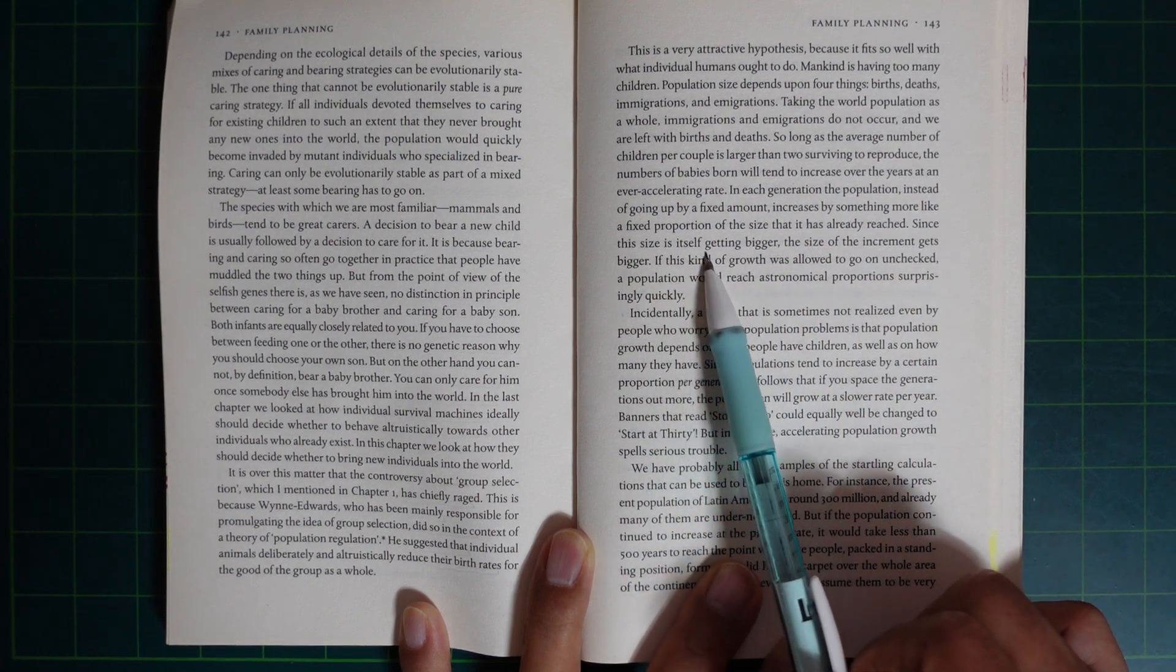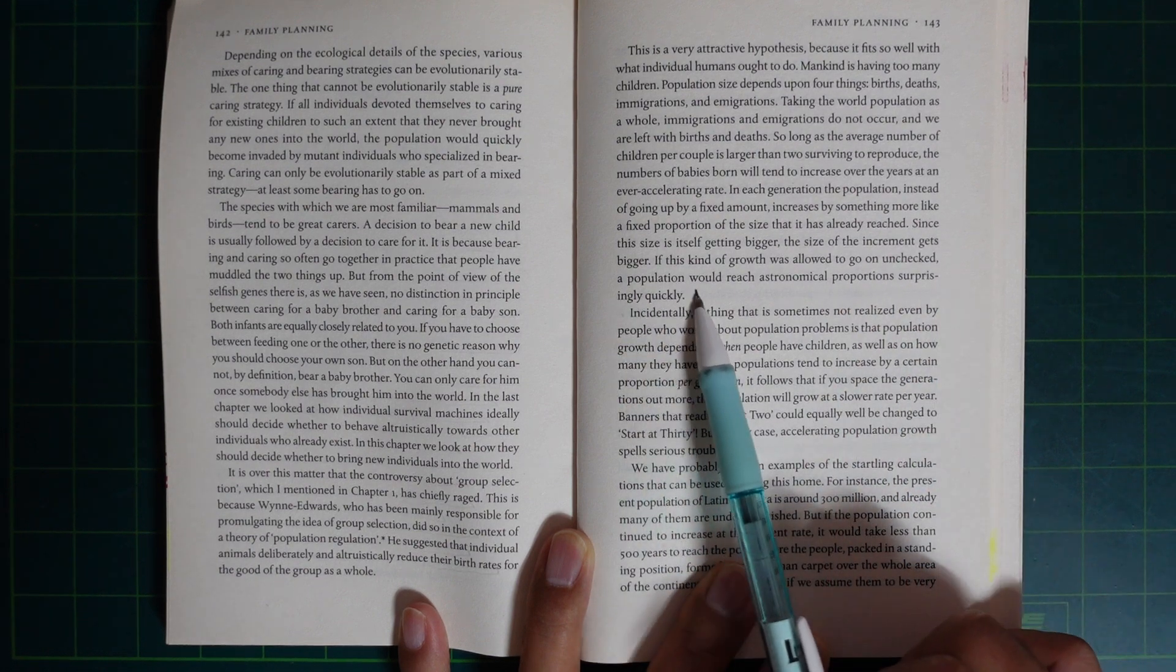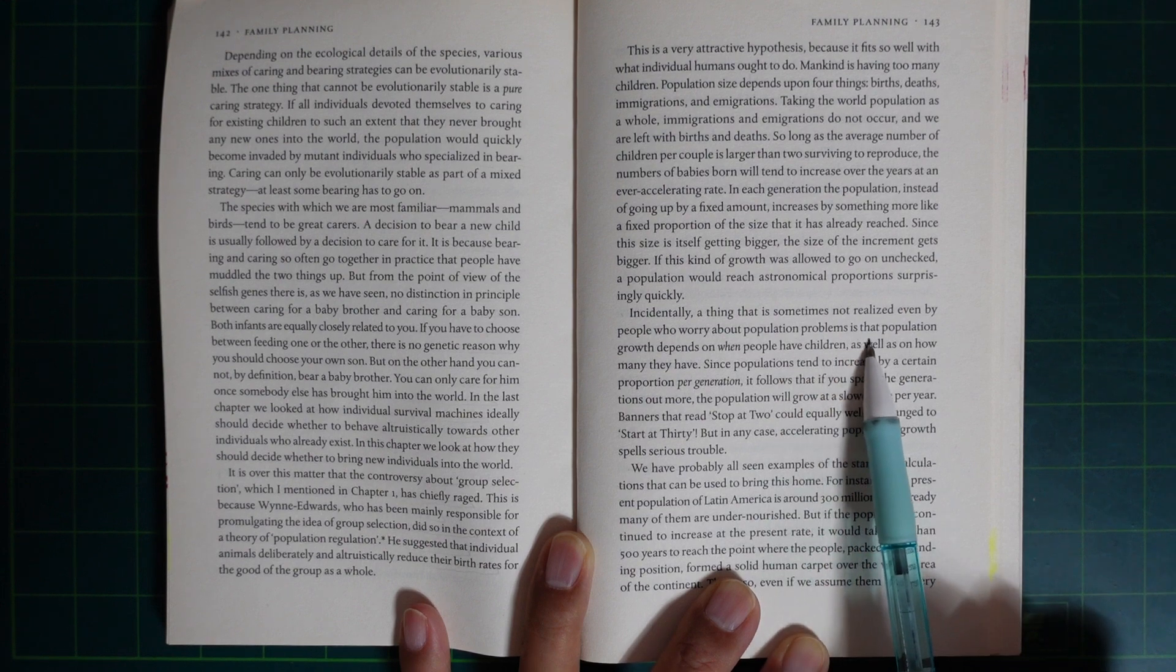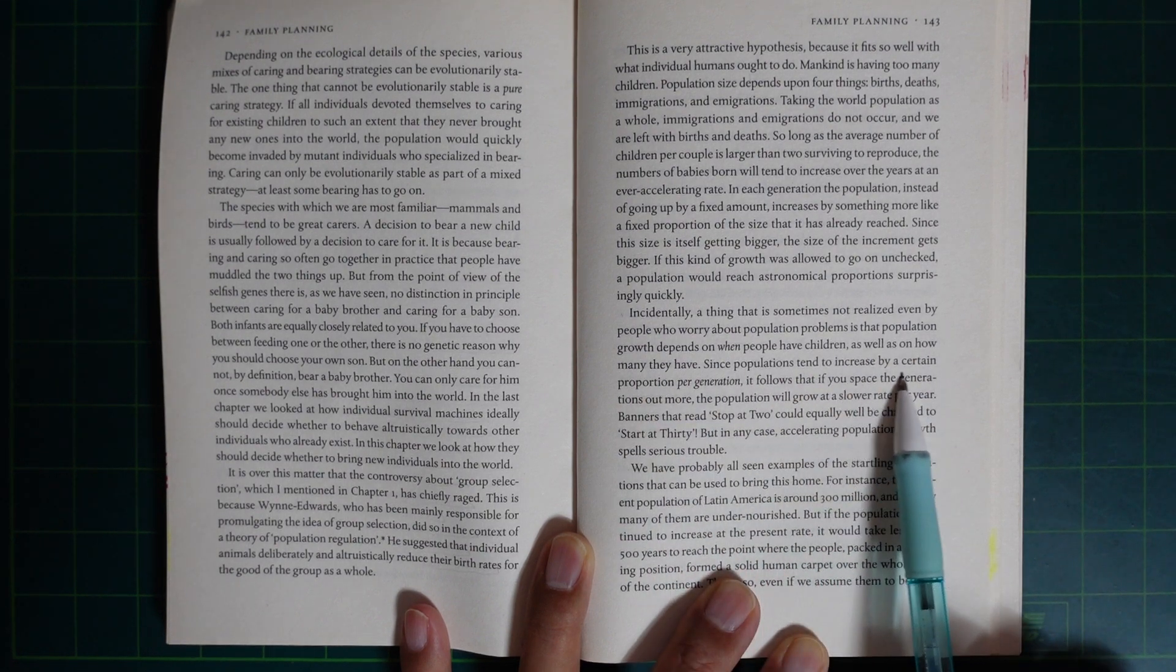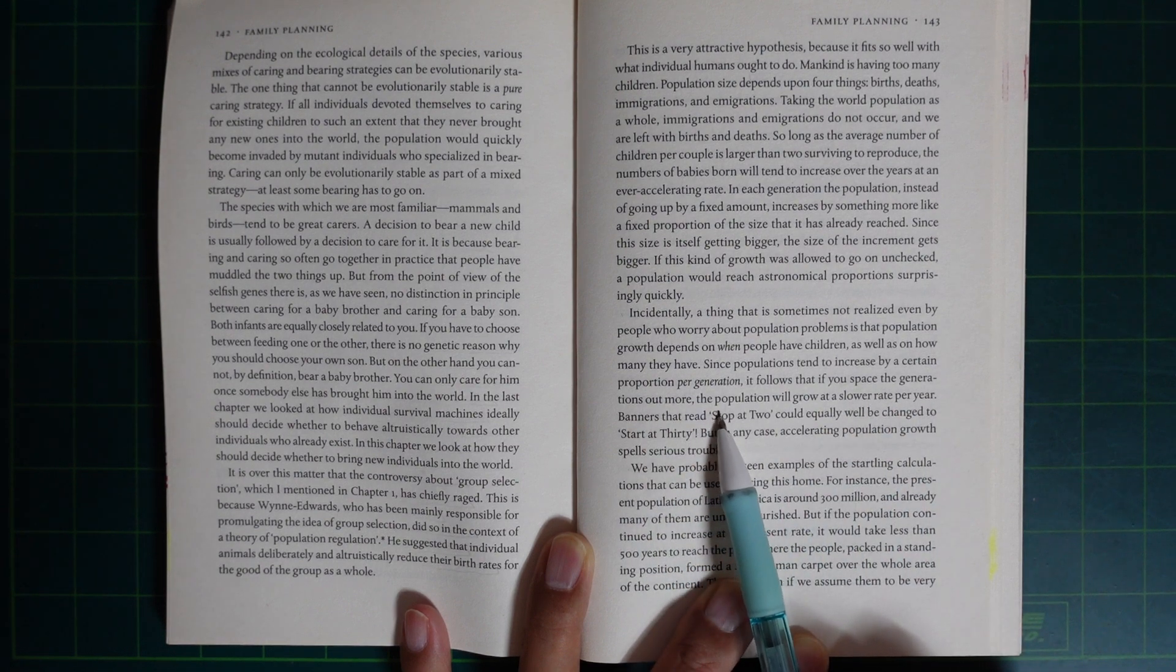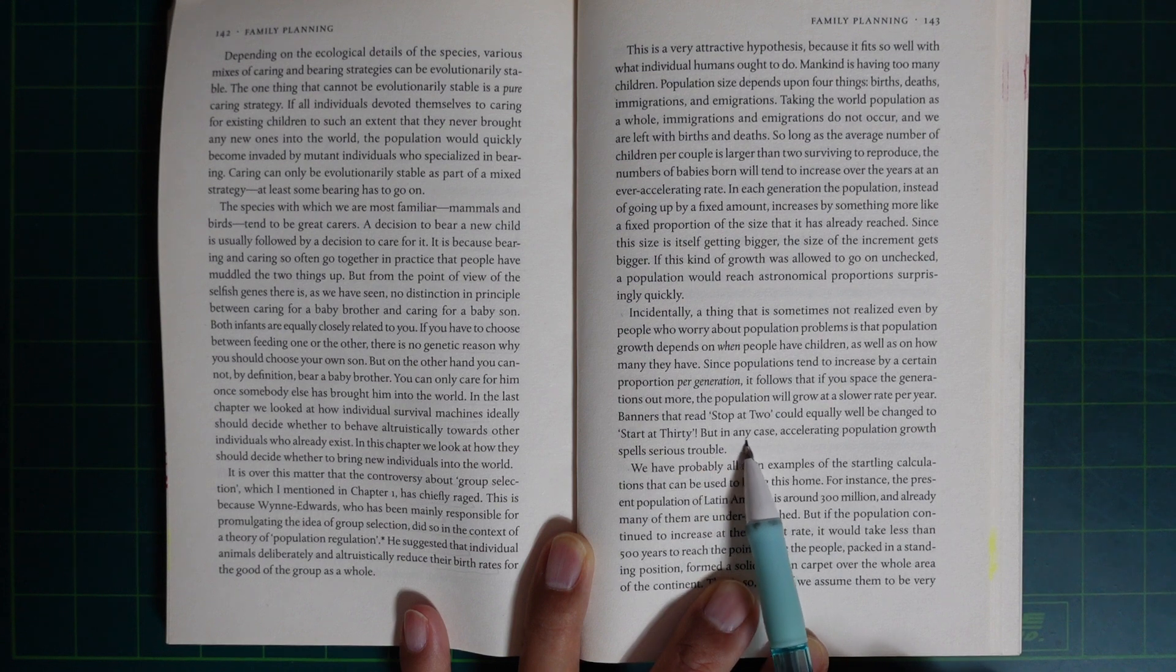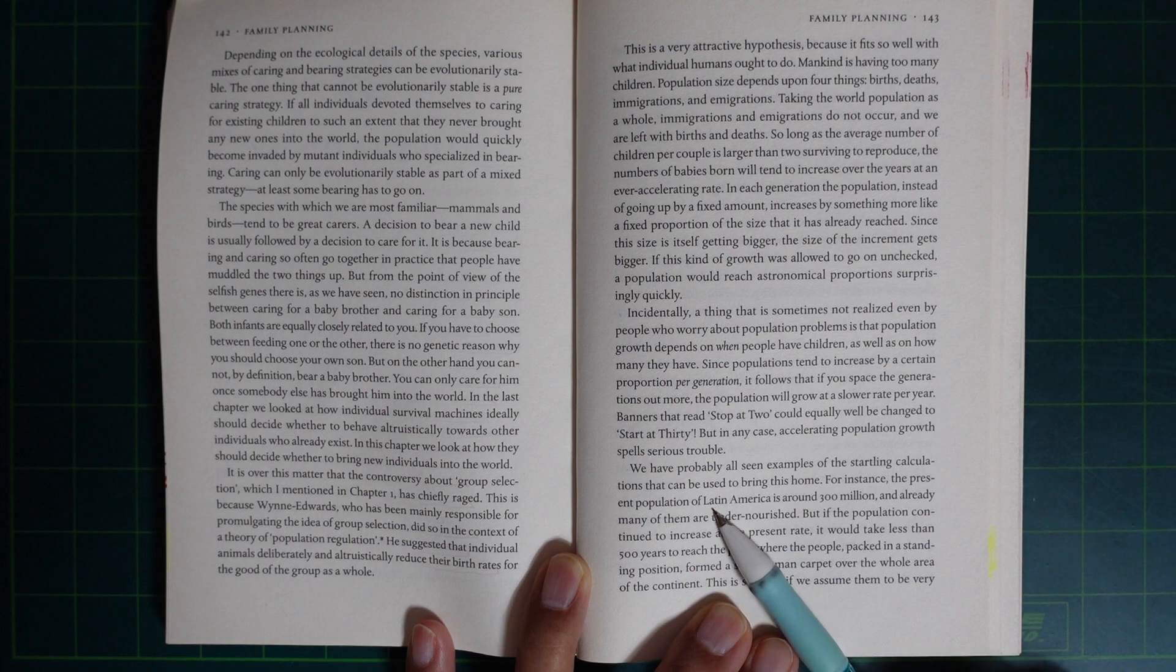In each generation, the population, instead of going up by a fixed amount, increases by something more like a fixed proportion of the size that it has already reached. Since this size is itself getting bigger, the size of the increment gets bigger. However, if this kind of growth was allowed to go on unchecked, population would reach astronomical proportions surprisingly quickly. Incidentally, a thing that is sometimes not realized even by people who worry about the population problem is that population growth depends on when people have children as well as on how many they have. Since populations tend to increase by a certain proportion per generation, it follows that if you space the generations out more, the population will grow at a slower rate per year.